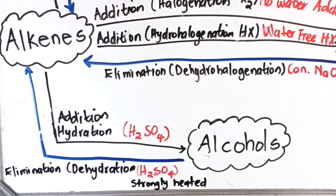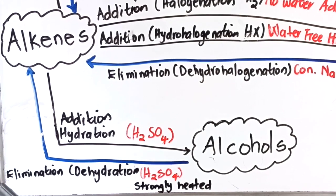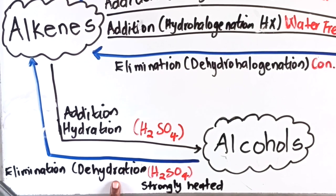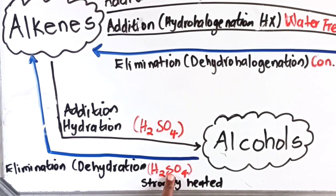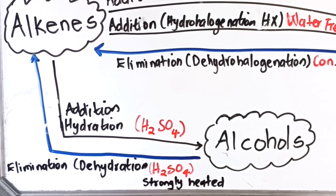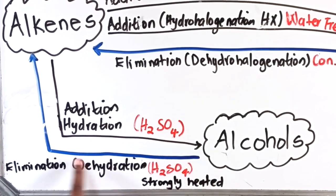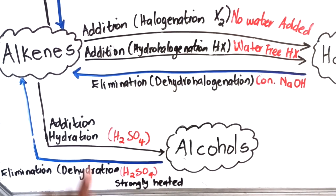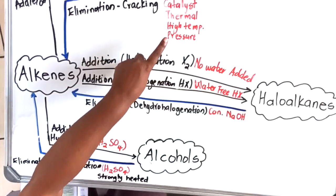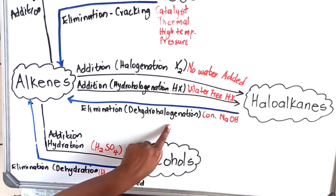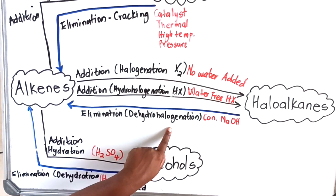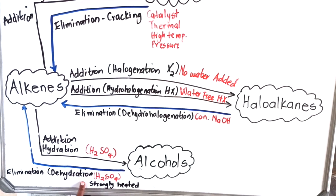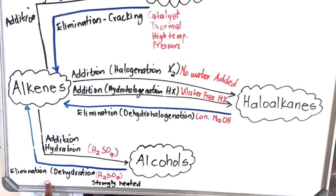The elimination of alcohol removes water, so the process is called dehydration. You need a strong acid such as sulfuric acid as a catalyst, and the whole reaction must be strongly heated. The alcohol then forms an alkene. So there are three kinds of elimination: cracking (alkane → alkene), dehydrohalogenation (haloalkane → alkene), and dehydration (alcohol → alkene).